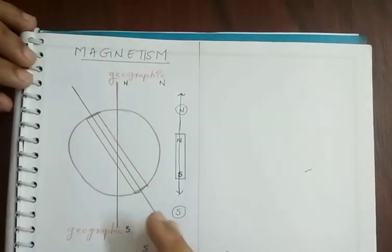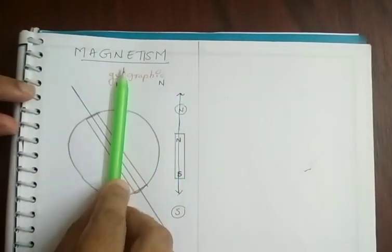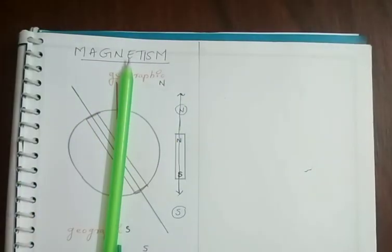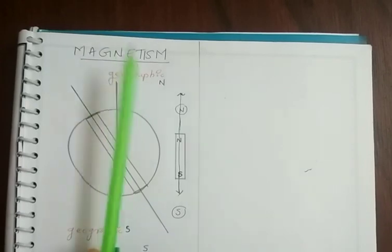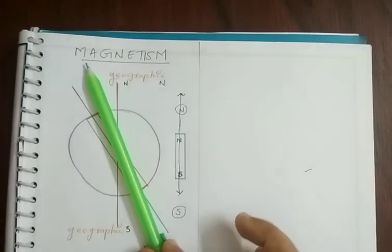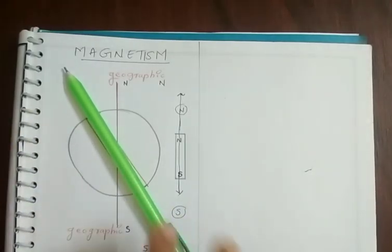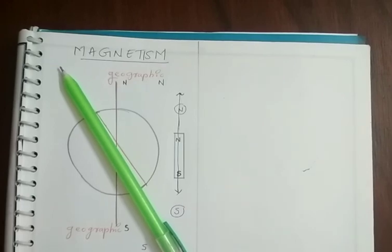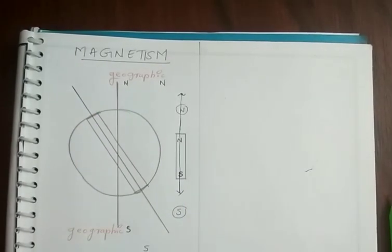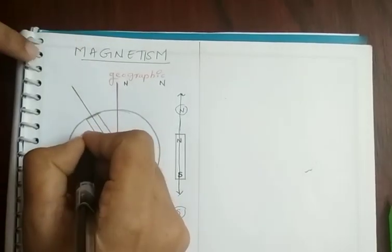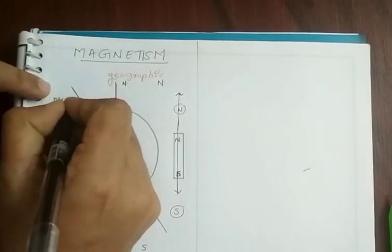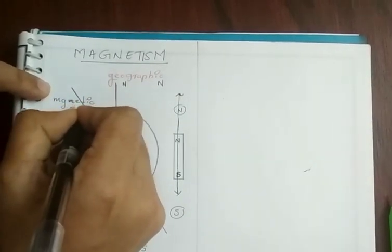Whenever we freely suspend a magnet, that magnet always aligns along a particular direction slightly different from the geographical axis. We have a geographic axis, but if we have a bar magnet freely aligned, the bar magnet does not align along the geographic axis but aligns in a slightly different manner. That particular axis along which any magnet aligns itself is known as the magnetic meridian.